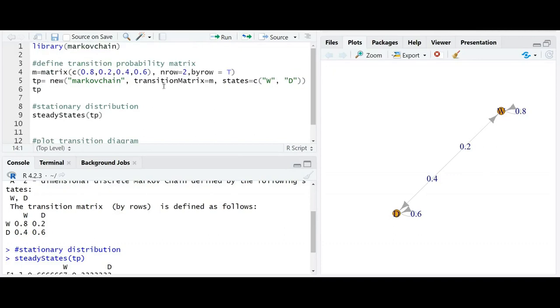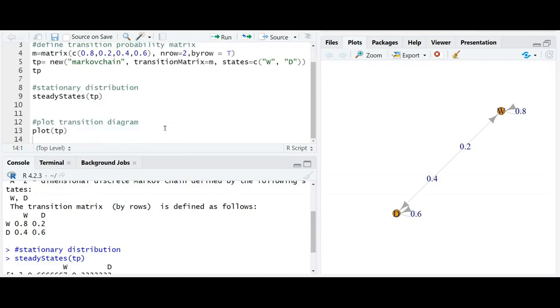So by using this code, we can easily compute the stationary distribution in Markov chain. That's all. Thank you for your patience hearing.